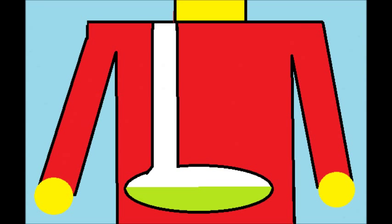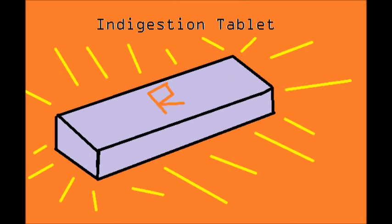The average stomach acid level is used to help digest and break down food. The stomach acid level is rising because this man has eaten too much, and therefore there must be more acid to break down the digestive system. Indigestion tablets contain alkali which neutralizes the stomach acid, turning it to a water-like substance, making sure that there is no longer a burning sensation in your esophagus near your heart.